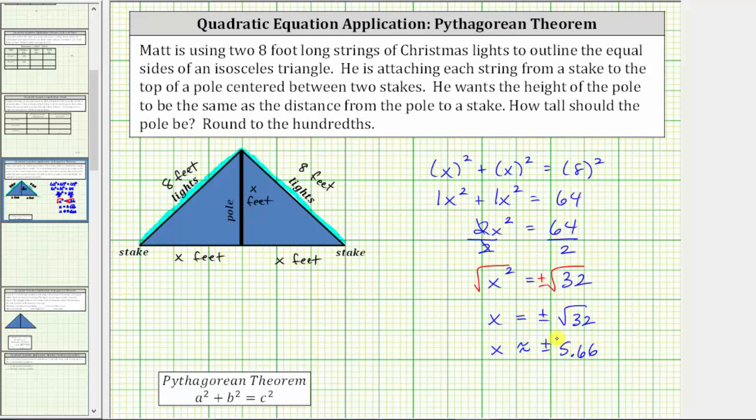But again, in our case x is a length, so we only use the solution of x is approximately positive 5.66. To answer the question, the pole needs to be approximately 5.66 feet tall. I hope you found this helpful.